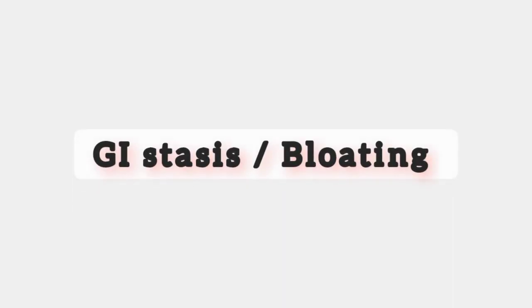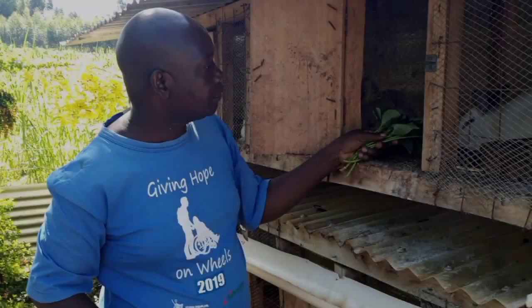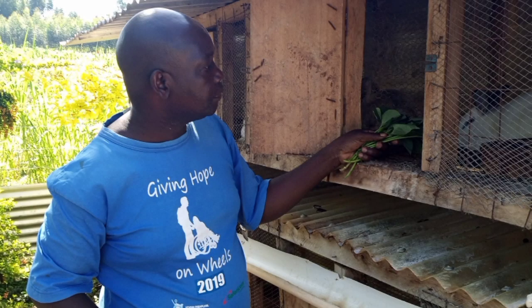Disease four: GI stasis, or bloating. Treatment and prevention: control the amounts of servings. A handful of each feed type at every feeding time is recommended to ensure that the rabbit is not overfed.